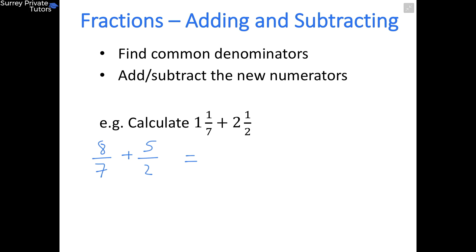Now we need to find common denominators, which we've just looked at. So the lowest common multiple of 7 and 2 is 14, so that's going to be the new denominator for each fraction. And 7 goes into 14 twice, so that means we need to double the 8, we get 16. And 2 goes into 14 seven times, so we need to times the 5 by 7, which is 35.